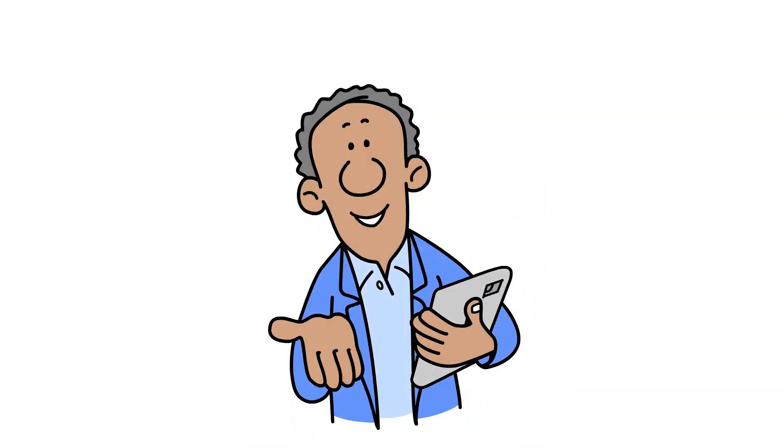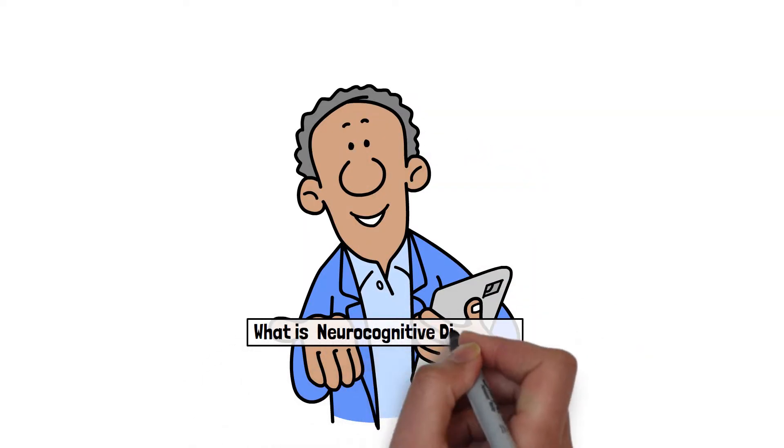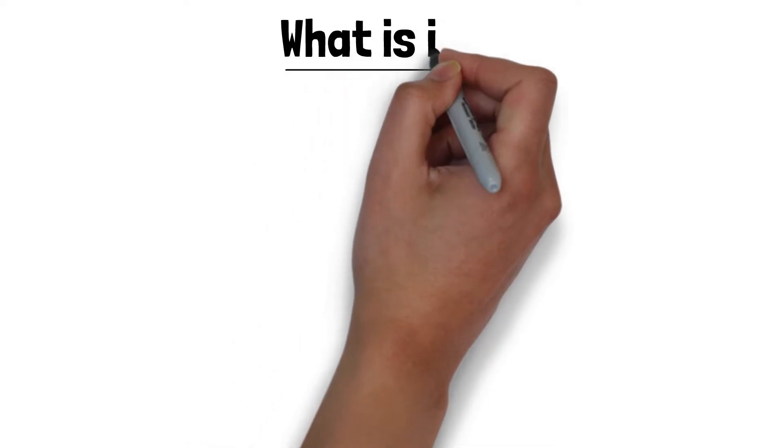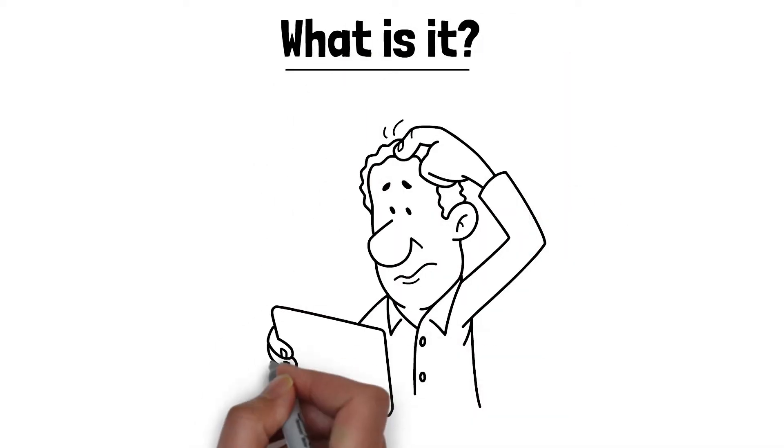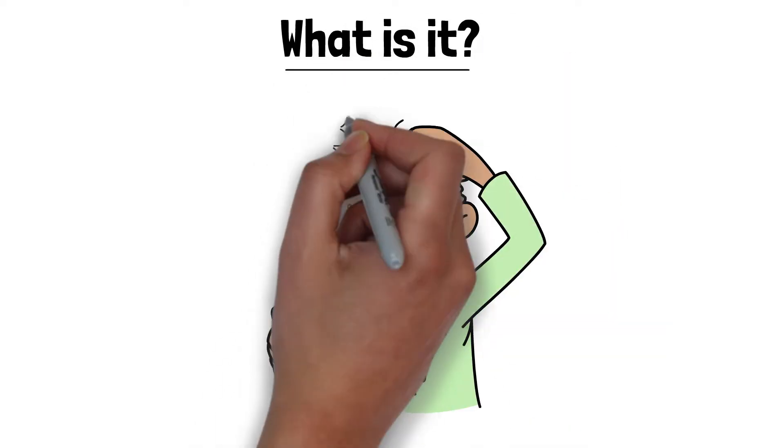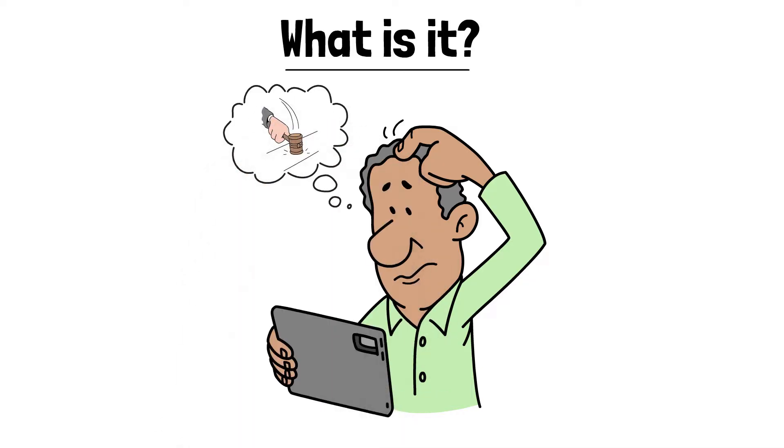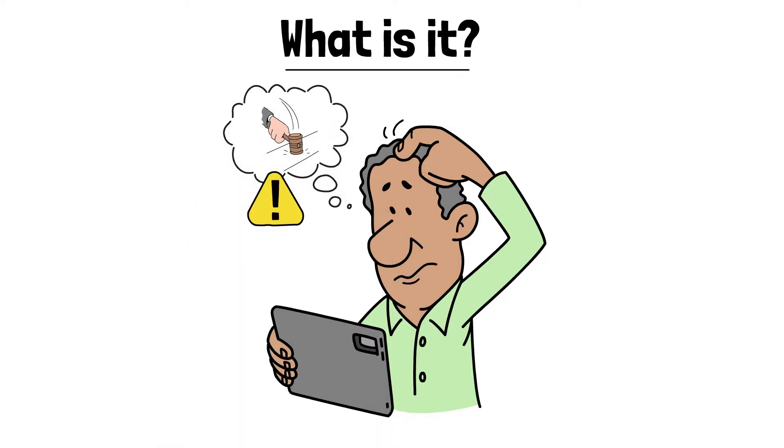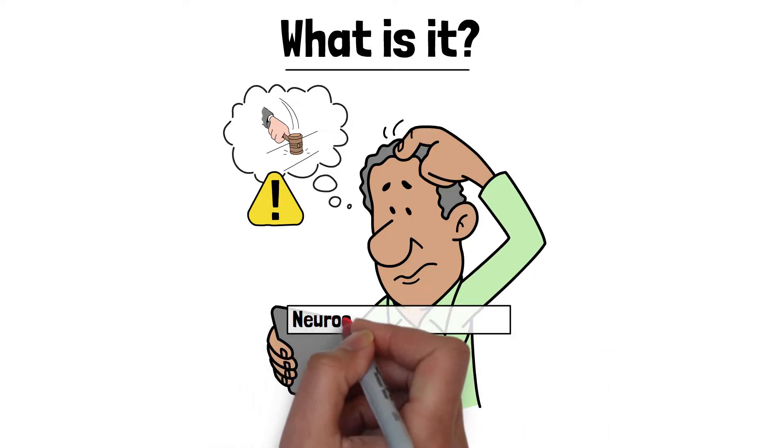Let's start with its first points. What is neurocognitive disorders, or you can say, brain-related thinking and understanding diseases? So let's see. When a person's brain, such as the ability to remember, think, understand, or make decisions, starts to have problems or weaknesses, then we call that condition neurocognitive disorders.